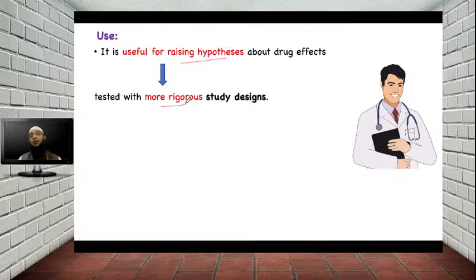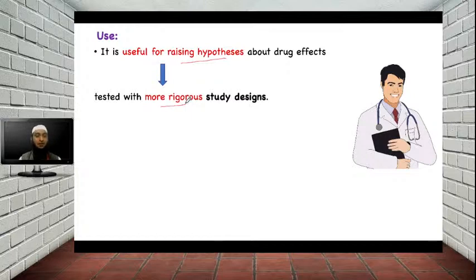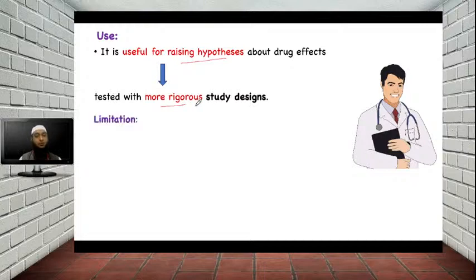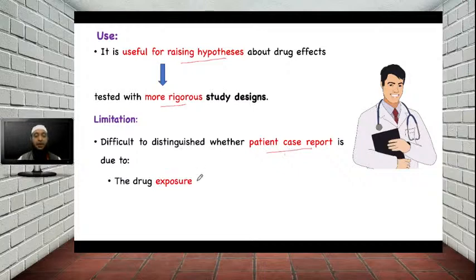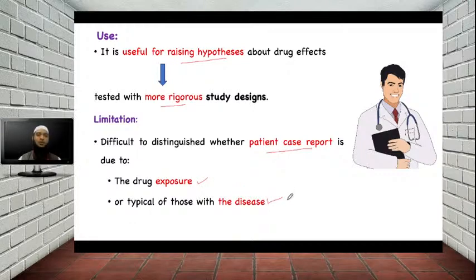The case report only helps you to raise the hypothesis about the drug effect and does not give directly a conclusion. There are some limitations of the case report study. The first limitation is it is difficult to distinguish whether the adverse effect the patient is suffering from is due to the drug exposure or maybe the patient is suffering from another disease that is causing the condition — for example, pulmonary embolism due to the disease rather than the drug. You are not sure whether the adverse event is really due to the drug exposure or due to some inherent disease the patient is suffering from.